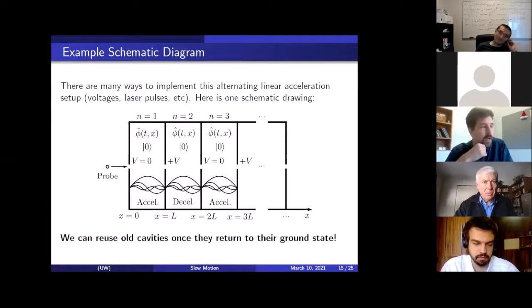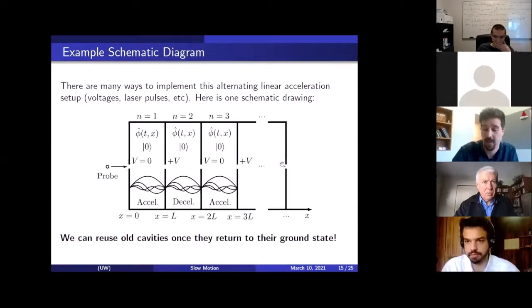To give a concrete example of what we might think of when we put this into an experiment is we could either use voltages, which is what I've talked about here in this diagram. So we have the probe traveling through and say it's a charged probe and it accelerates by this voltage and then decelerates and then accelerates and decelerates. It's being pushed and pulled by the voltages. Or you could also probably do this with laser pulses. We're not really committed to a particular experimental implementation. But one thing which would hold in any implementation is that we can reuse old cavities once they return to their ground state. So once the probe goes through all of these, it'll mess up each field, but if they have some finite quality factor, they'll relax at some rate. And then we can circle back and come back through them again a second lap around. So we don't need a huge number of cavities to do this.